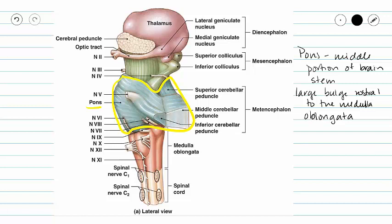Our pons is generally considered to be a large bulge or swelling that is going to be rostral to our medulla oblongata.